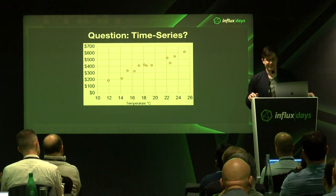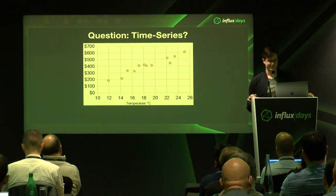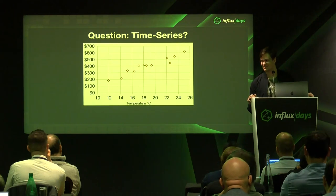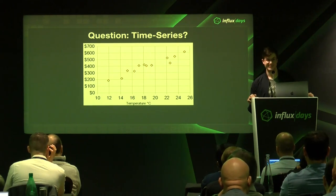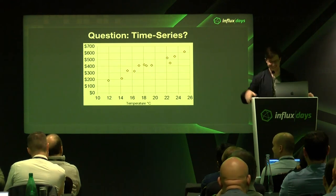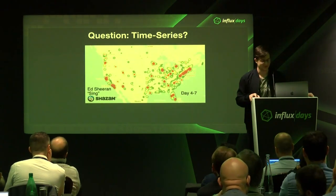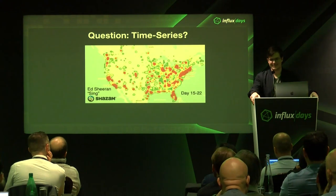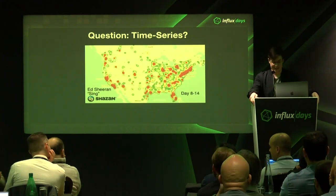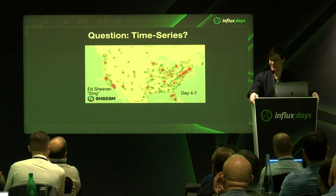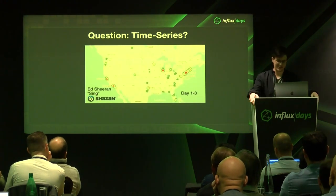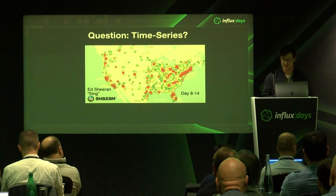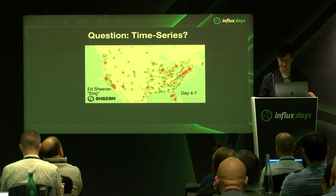Just so I'm not talking to myself the whole time — is this graph time series? We have x-axis temperature, y-axis price. Would anybody think this is time series? [Audience: No.] Definitely not time series. What about this one over here? [Audience: Yes.] Exactly. This is the viral spread of Ed Sheeran's song, and we're looking at that over time — a visualization of the map showing how its popularity spread over time. The thing that is changing here is the time axis.